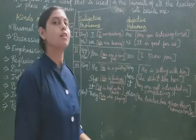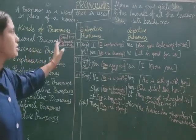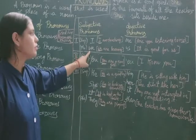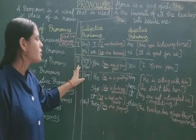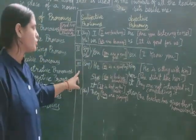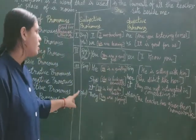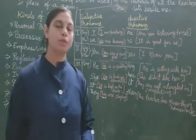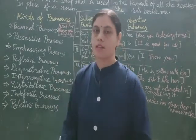So in this way, personal pronoun is divided into subjective pronoun and objective pronoun. For first person singular we use 'I' as subjective and 'me' as objective; for plural we use 'we' as subjective and 'us' as objective. Second person uses 'you' for both. Third person uses he, she, it as subjective and him, her, it as objective. In plural we use 'they' as subjective and 'them' as objective. In my next video I will be explaining possessive and other kinds of pronoun.